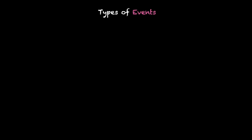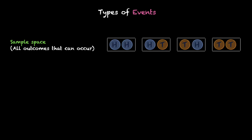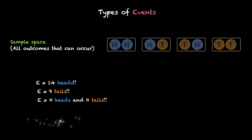Let's talk about types of events. Let's look at a few examples. Suppose we have this event which says we need 14 heads, another one: nine tails, and one more: zero heads and zero tails. What can you say about these three events? Can you have these events? Well, no — if you toss two coins, these events are not possible. And hence they're called impossible events.